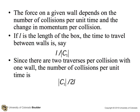So we can do a little exercise by noting that the force on a given wall depends on the number of collisions per unit time and the change in momentum per collision. If L is the length of the box, the time to travel between walls is, say in the one direction, L over the absolute value of C1. And since there are two traverses per collision with one wall, the number of collisions per unit time is absolute value of C1 divided by 2L.